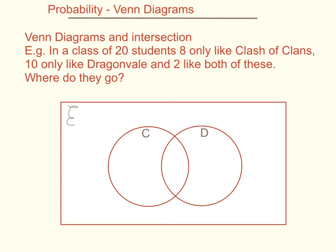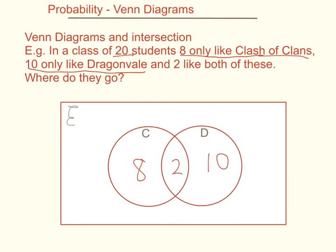Let's do the example. There are 20 students altogether. 8 only like Clash of Clans, so those 8 go in this section inside the Clash of Clans circle but not inside the Dragonvale circle. 10 only like Dragonvale, so I need to put 10 there. And 2 like both, so those 2 go inside both circles — they're inside the Clash of Clans circle and inside the Dragonvale circle.